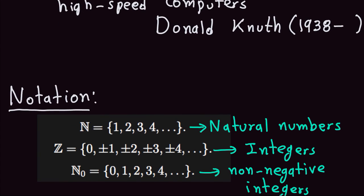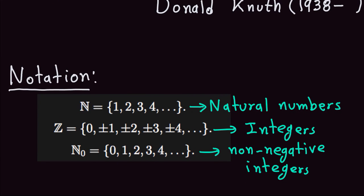Let's continue with the notation. We talked about the natural numbers, denoted ℕ, which is one, two, three, four — not including zero. The integers ℤ are zero together with all the natural numbers and their negatives, also an infinite set. Because I'm not considering zero a natural number, I'll have another notation for the collection starting at zero: zero, one, two, three, four, and so on. We call these the non-negative integers, because these are exactly the integers that are non-negative. Zero is neither negative nor positive.